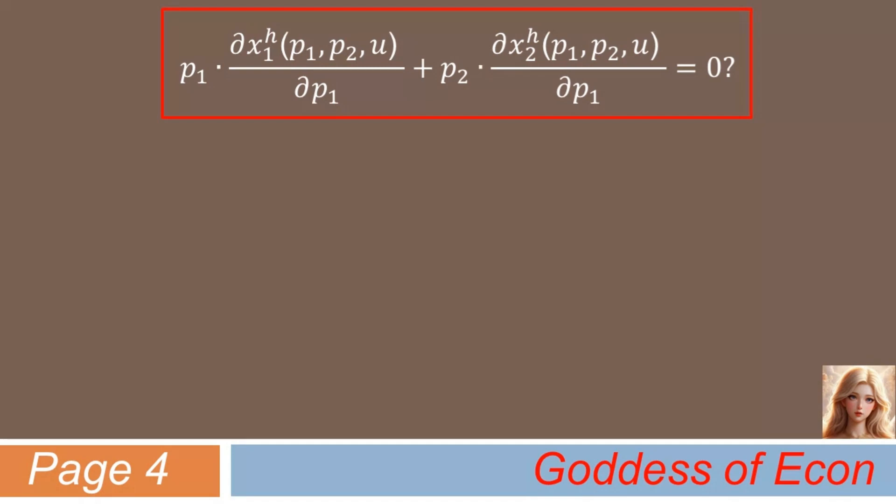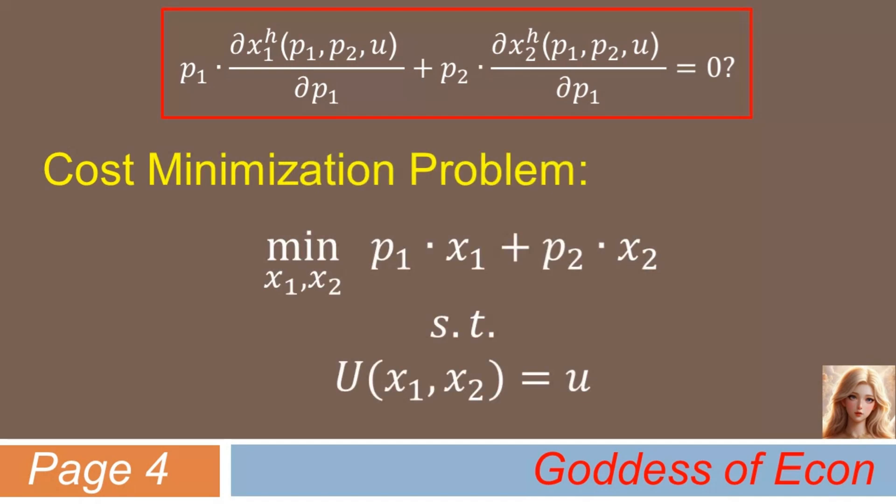Well, one way to do it is to look at the conditions that should hold at the optimum of the following cost minimization problem. That is, minimize P1 times X1 plus P2 times X2, subject to U of X1 and X2 equal to a small u. Are you guys familiar with this cost minimization or constrained optimization problem? I am sure most of you guys are, as this is the optimization problem that you need to solve in order to find the Hicksian or compensated demand function, which constitutes the solution to the problem.